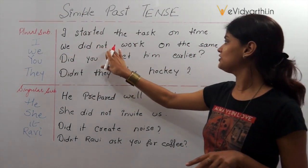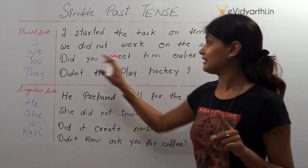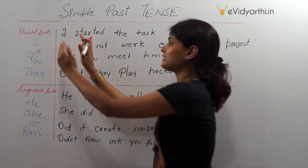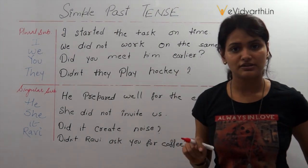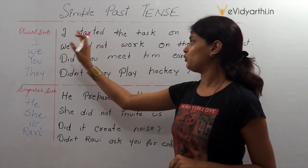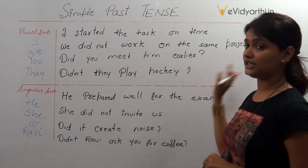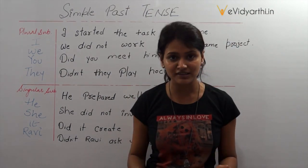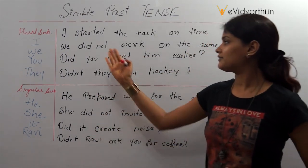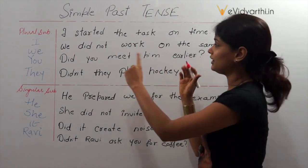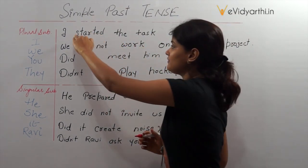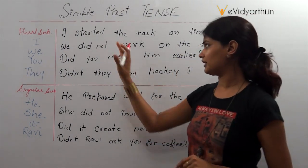'We did not work on the same project.' This is the negative structure of simple past tense. What we do is use 'did not' along with the subject. 'Did' is exactly the word which shows that it is speaking about the simple past tense. Along with 'did', whether it is a negative sentence or an interrogative sentence, we do not use the second form of the verb — we use the first form. Not 'worked' but 'work'. I did not start the task on time. If there is no 'did', then I use 'started'. So along with 'did', no second form of the verb.